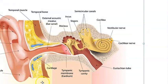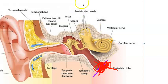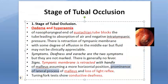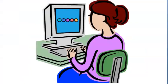In the tubal occlusion stage, there can be conductive deafness, though it is not very marked. This completes the first stage of ASOM. The second stage is pre-suppuration.